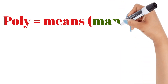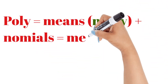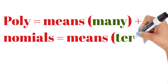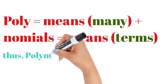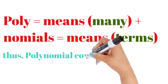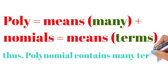Poly means many. Nomials means terms. Thus, polynomial contains many terms — polynomial means many terms.